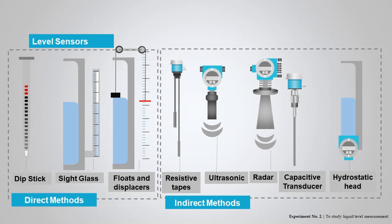Commonly used indirect liquid level measurement methods include resistive tapes, ultrasonic sensor, radar, capacitive transducer, or hydrostatic head measurement.